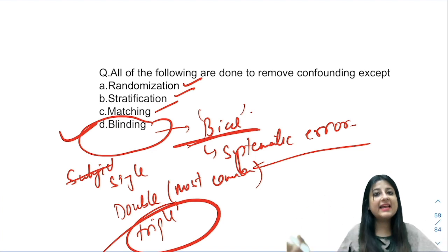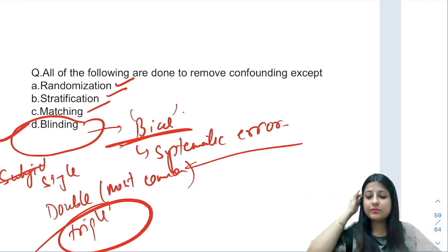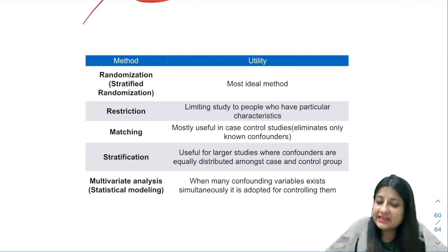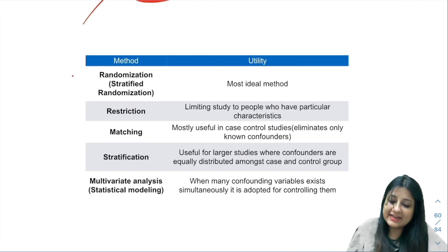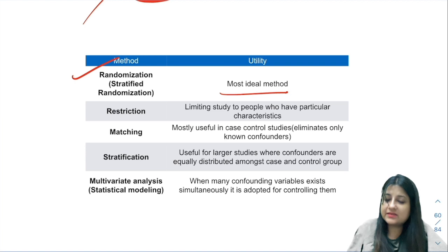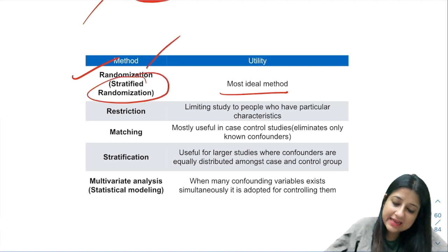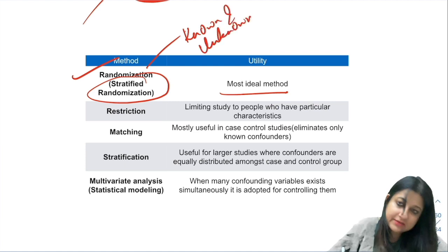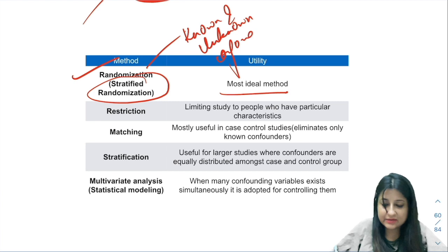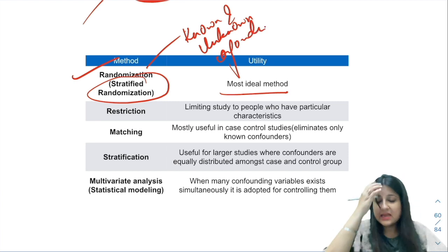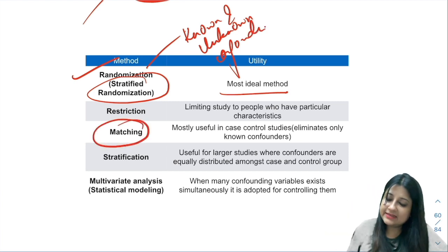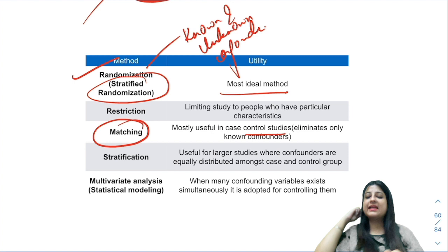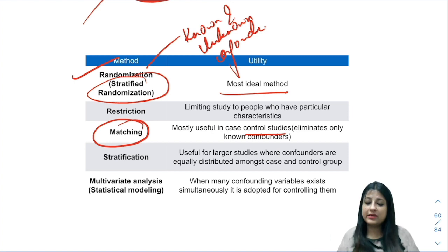So B for B — blinding eliminates bias. But if you want to see techniques to eliminate confounders, randomization is the most ideal method because it eliminates both known and unknown confounders. Matching is done only in case-control study design, and it eliminates only known confounders.